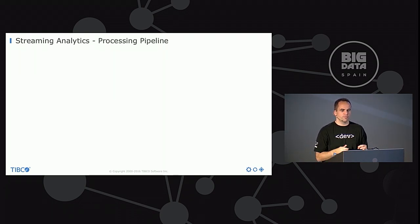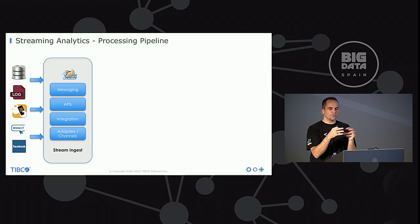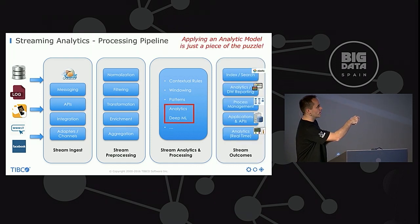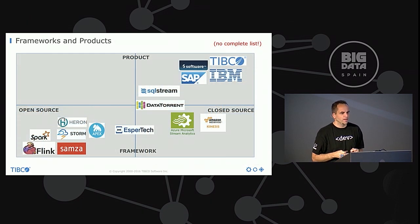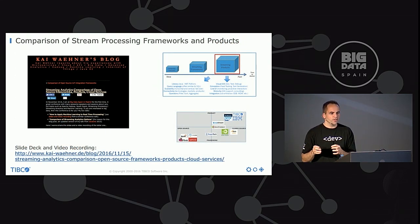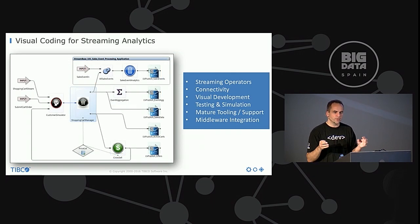For real-time processing you have a processing pipeline: first stream ingestion where you get the streams of real-time data, then you pre-process it with filtering and transformation, and then as one part you apply the analytic model to every single new event in your streaming pipeline. There are a lot of frameworks for this — Apache Flink, Apache Spark Streaming, and Apache Apex. The key really is that you apply the machine learning model which you have trained before and apply that to real-time processing.